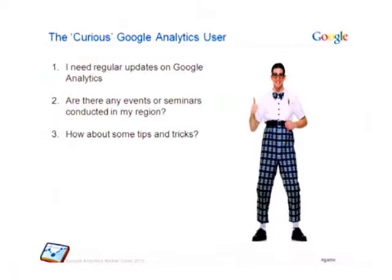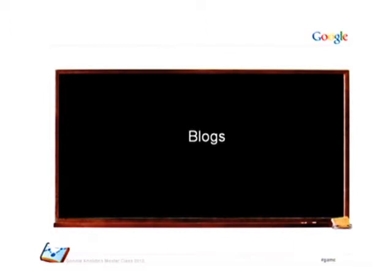Moving on to the second user type, the curious one — someone who basically needs regular updates about the product and needs to make sure that they are aware of whatever is happening within it. For these kinds of users, we have blogs and the YouTube channel, basically making sure that we are giving the user whatever updates are happening on the product end.